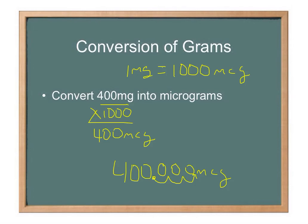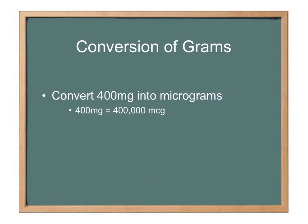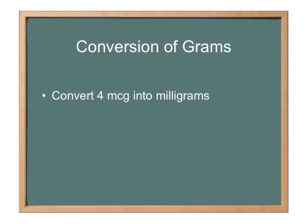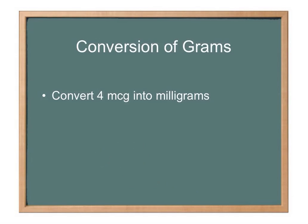If you're going the other way — from micrograms into milligrams — you move the decimal point the other direction. So if you had 4 micrograms, take that invisible decimal point, move it to the left three times, fill in the zeros, and you get 0.004 milligrams. So 4 micrograms equals 0.004 milligrams — that's four thousandths of a milligram.